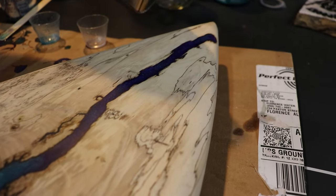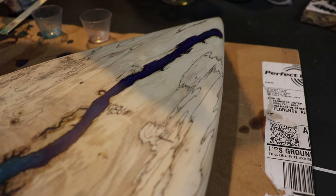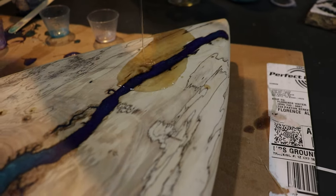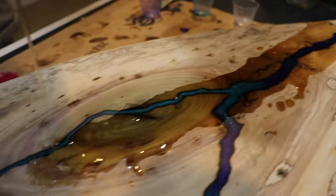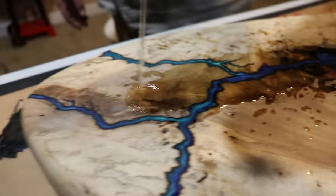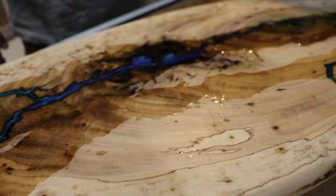Once the epoxy was poured, we sanded the board and then added a polyurethane clear coat on the top to add some extra shine and bring that wood grain back to life. It turned out beautifully.